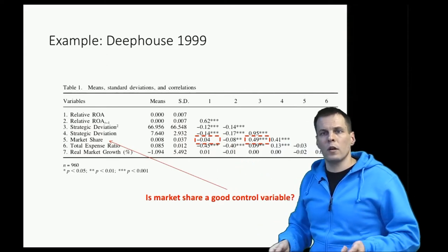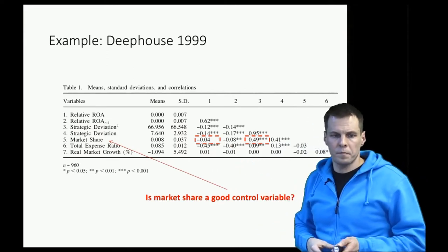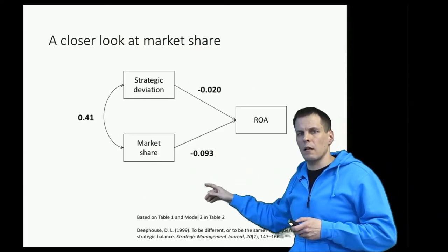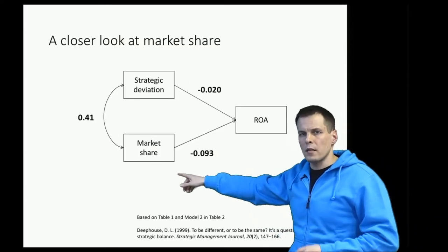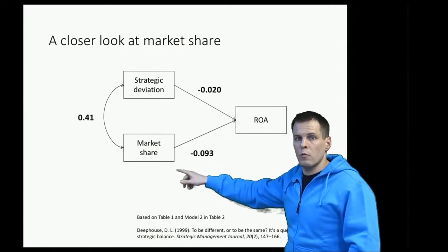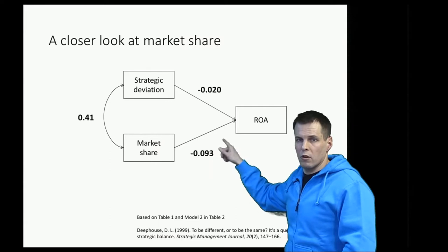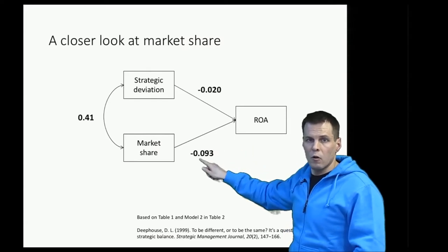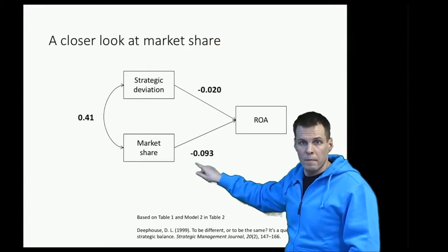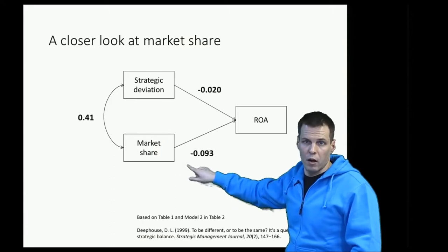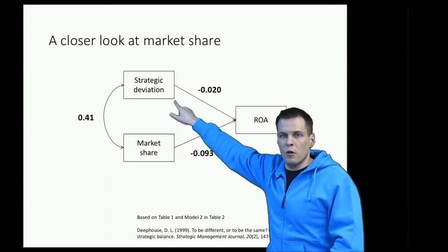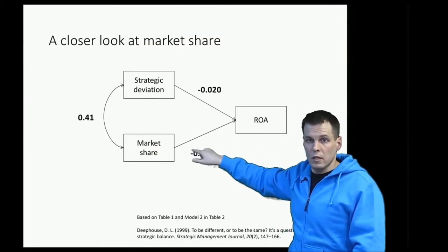Let's take a look at the actual modeling results from Deep House's paper. They find that market share has a negative effect on return on assets — so when market share goes up, return on assets goes down. Compared to the other effects in the article, this is a fairly large effect. The effect of strategic deviation is 0.02, so it's smaller — you can't compare directly, but we'll use that for convenience. And these two variables are highly correlated.